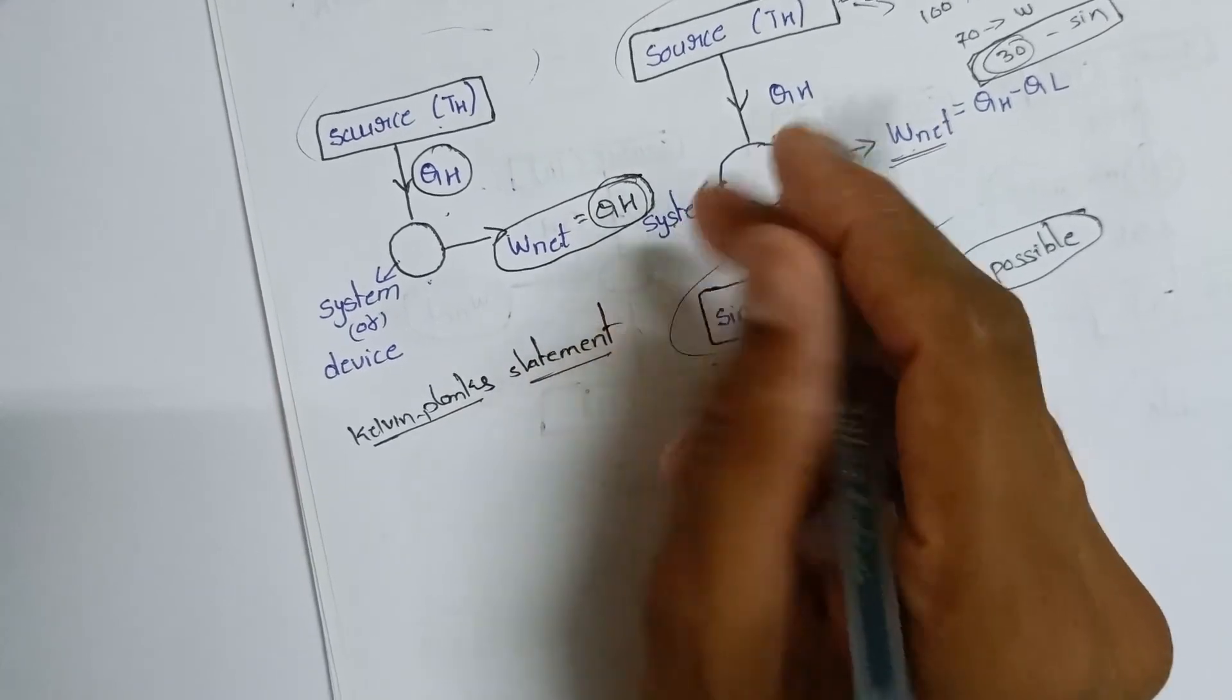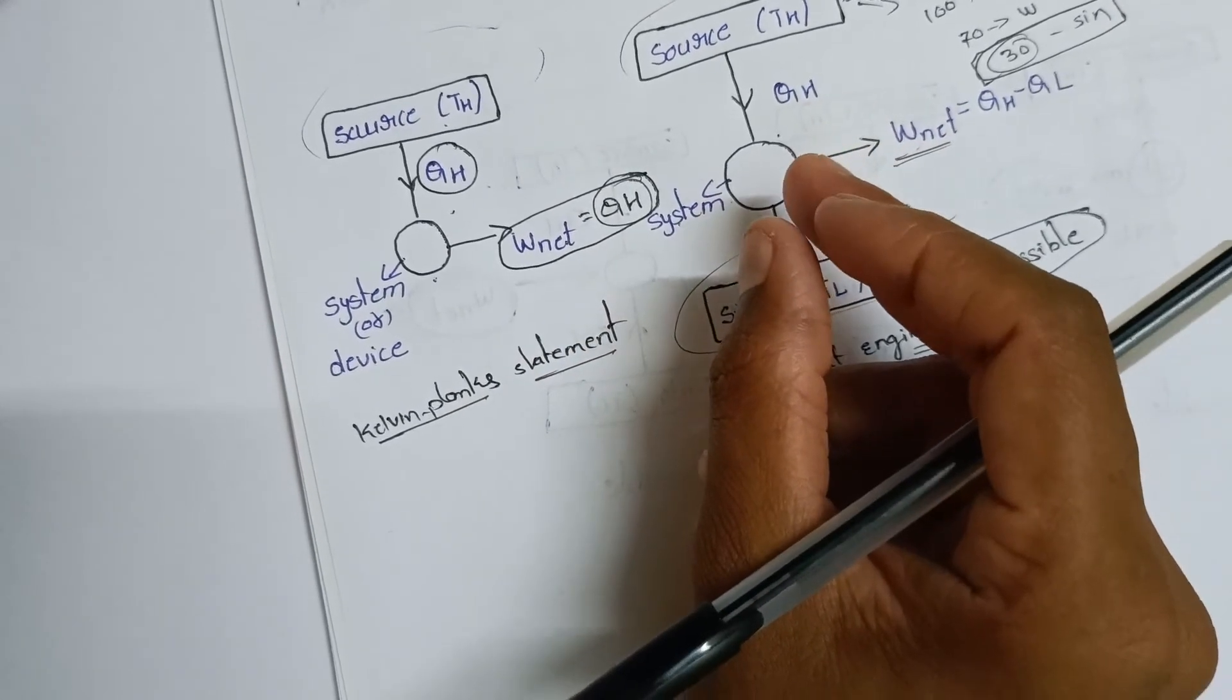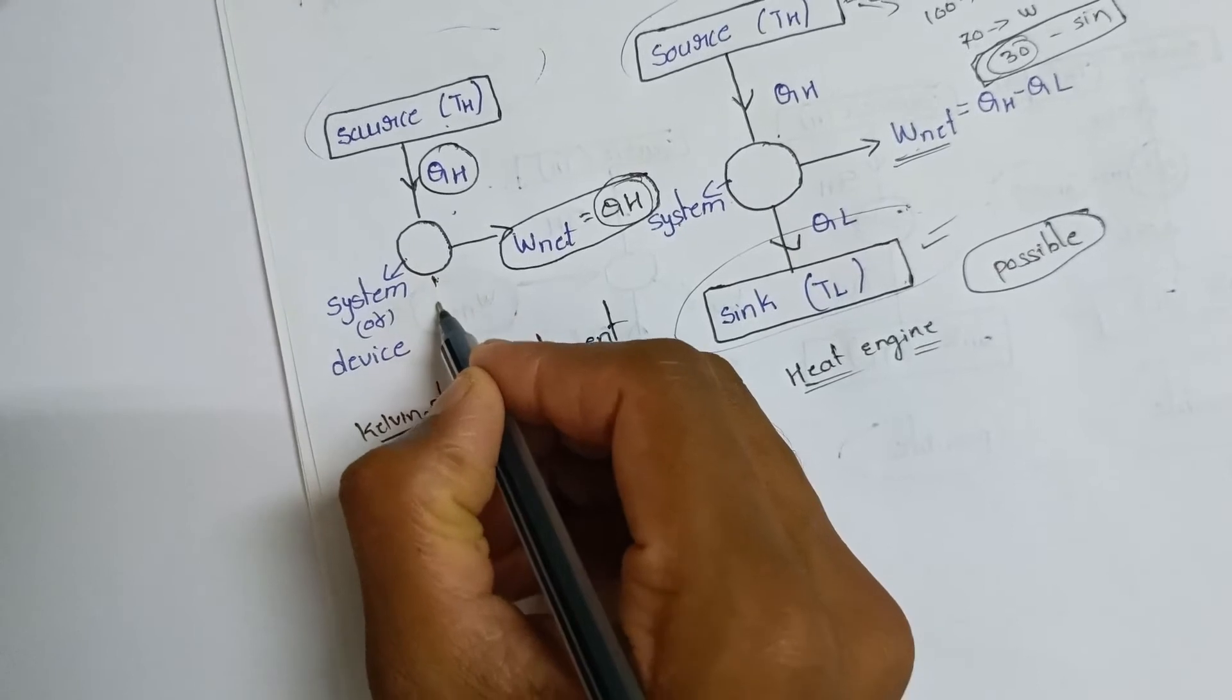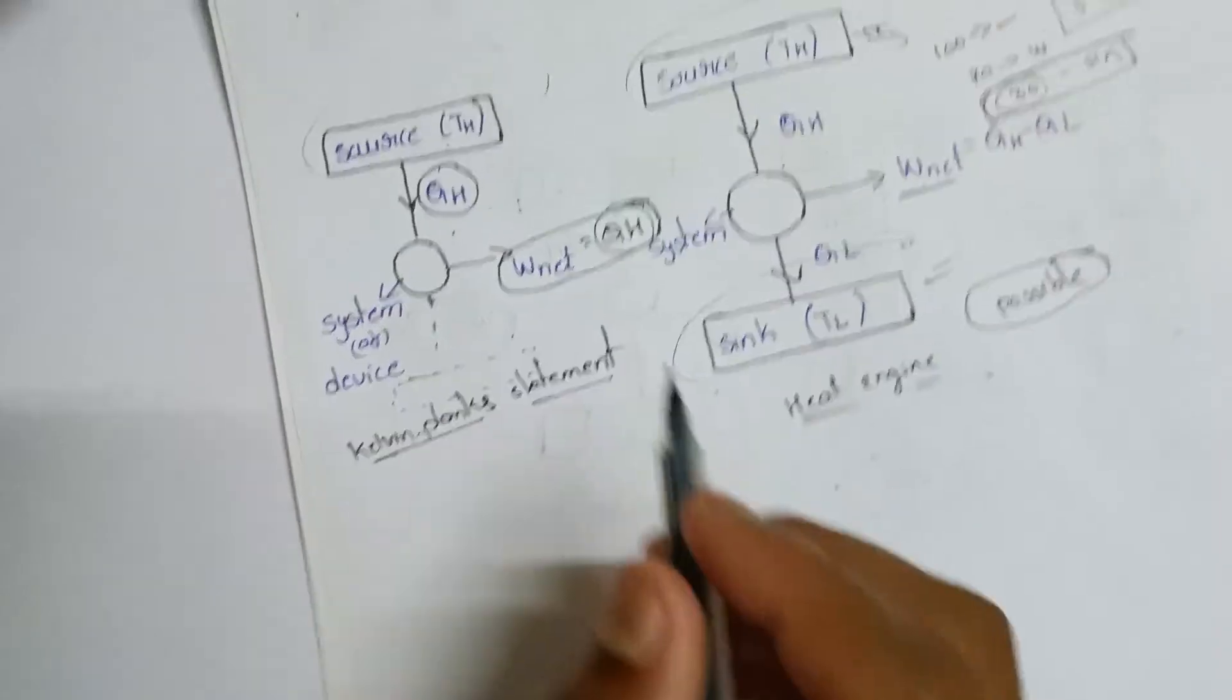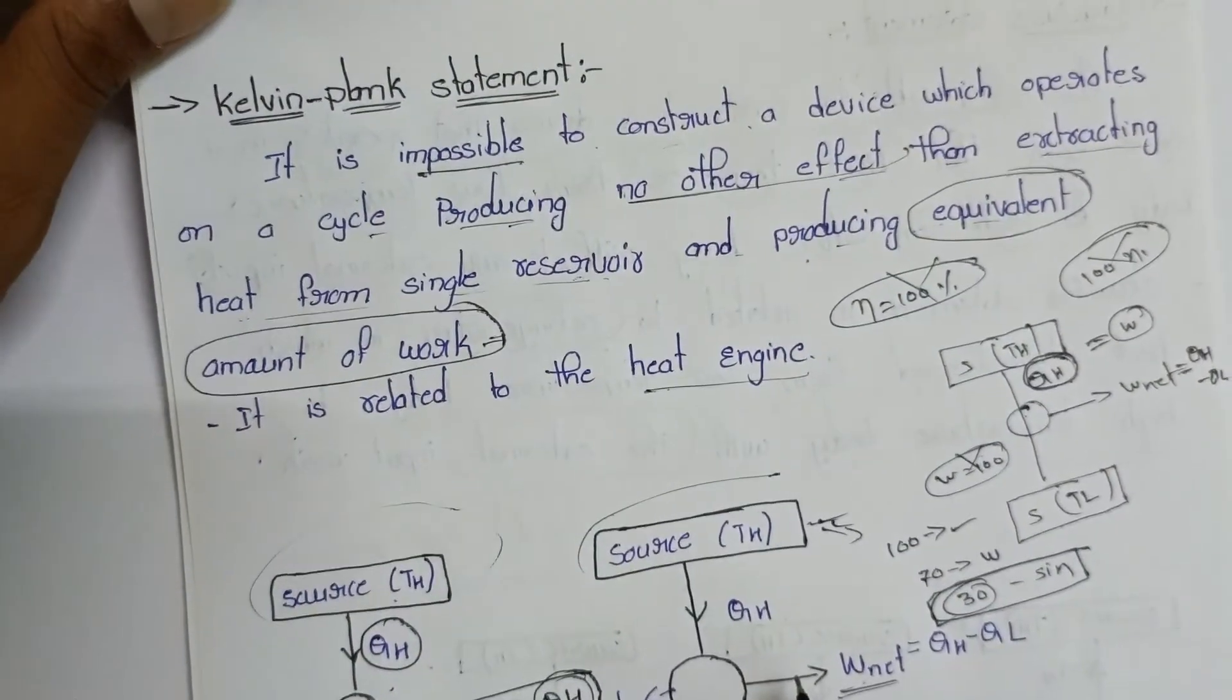This is the diagram. There's a source but no sink. A single source with no sink - this is impossible. This is the Kelvin-Planck statement.